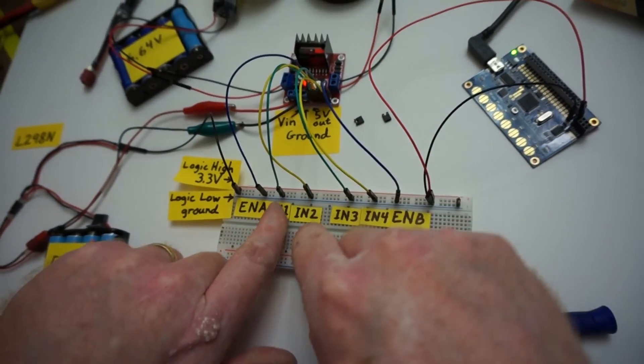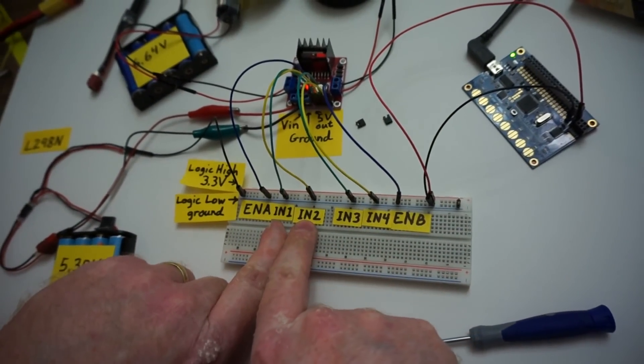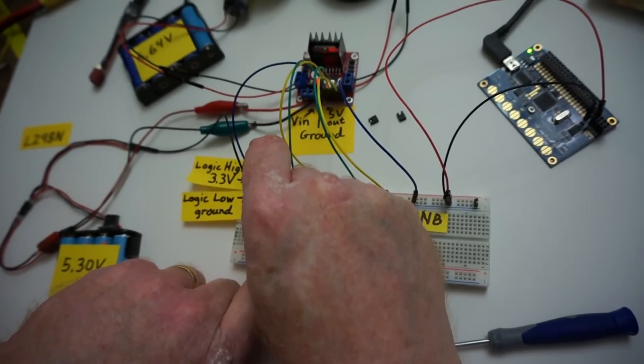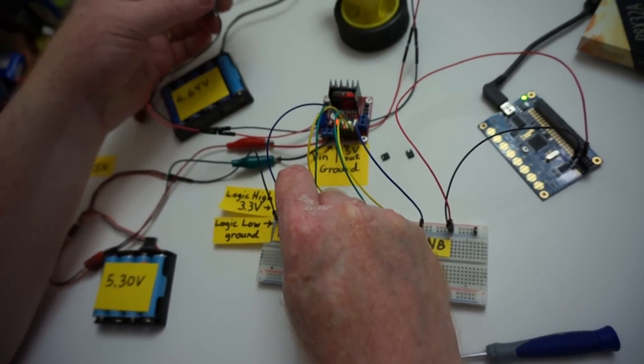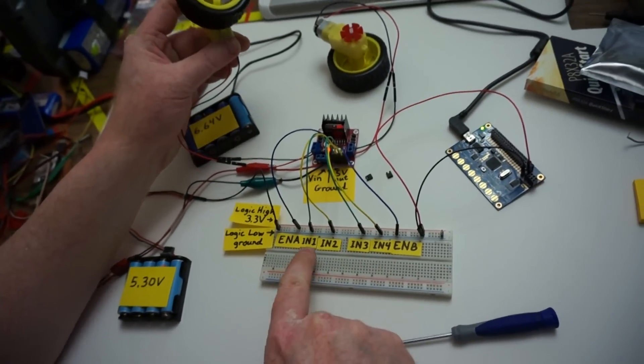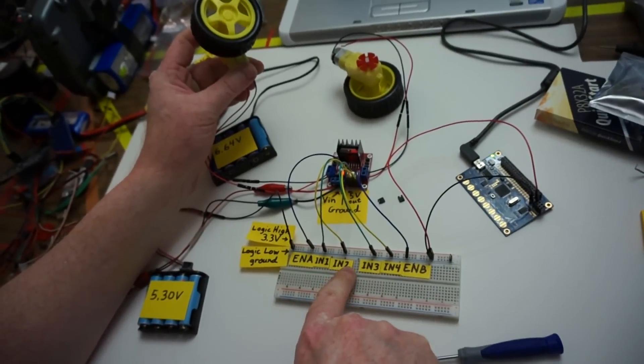So let's move the input pin. Okay, first of all, let's see what happens if we enable motor A. This is motor A here. Let's enable it. Nothing happens because both of the input pins are low.